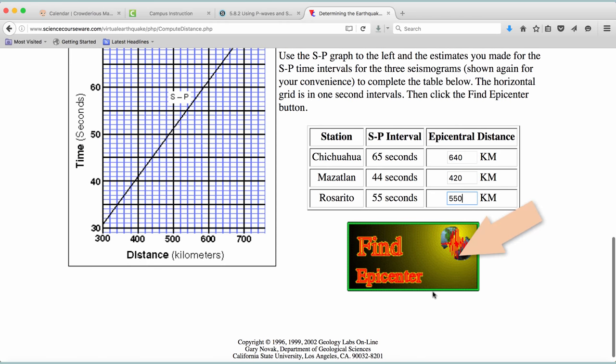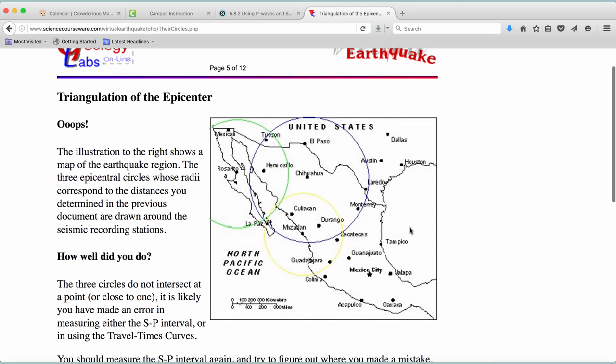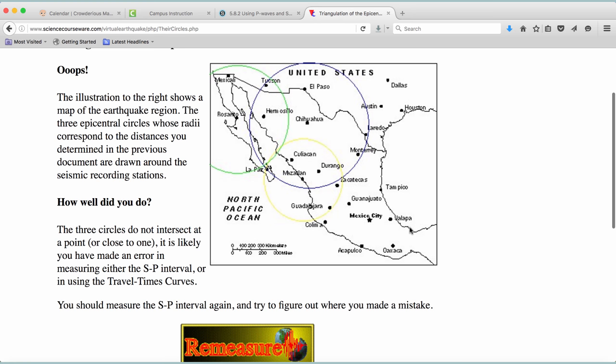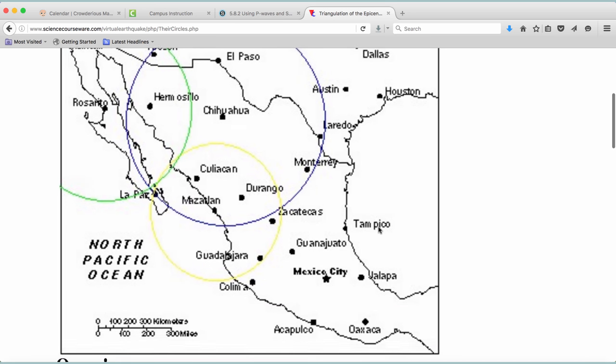Now, I click on the button for Find Epicenter and I check the map they plotted with three circles. Each one is a different color and represents that distance you got for each seismic station. Where they intersect may not be a clean point.